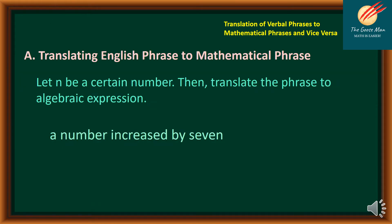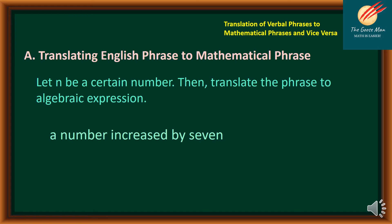Now that you have an idea on translating symbols into words, let's move on to translating English phrases to mathematical phrases. Let N be a certain number, then translate the phrase to algebraic expressions. For example: "A number is increased by 7." A number translates to N, increased by translates to plus, and 7 into numerals. Therefore, the expression can be translated into N plus 7.